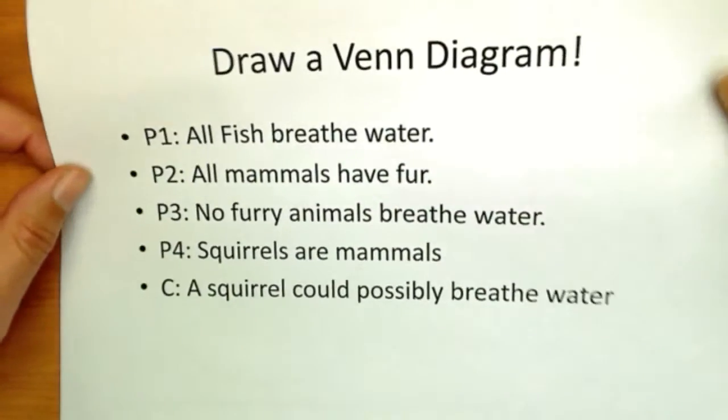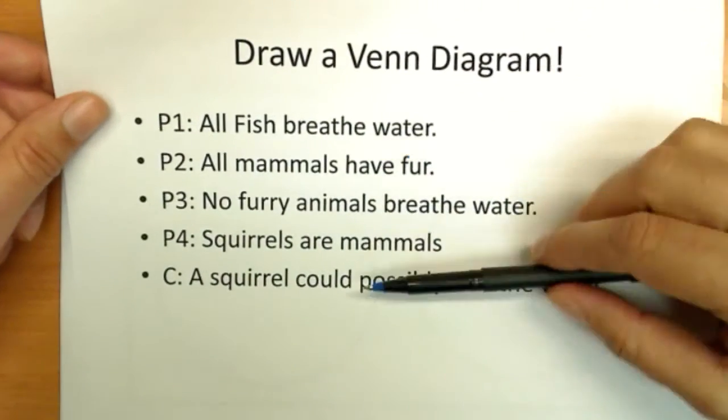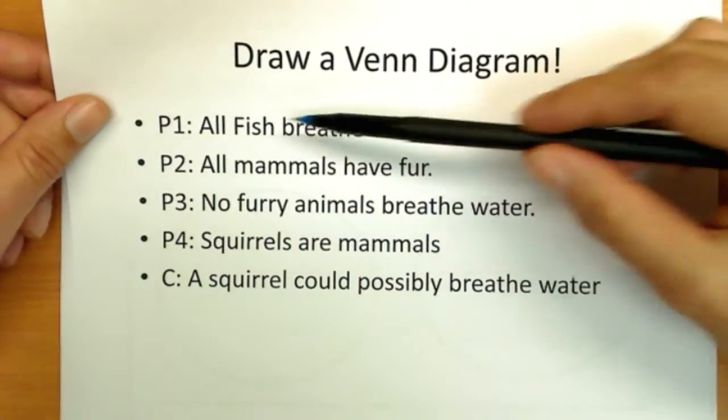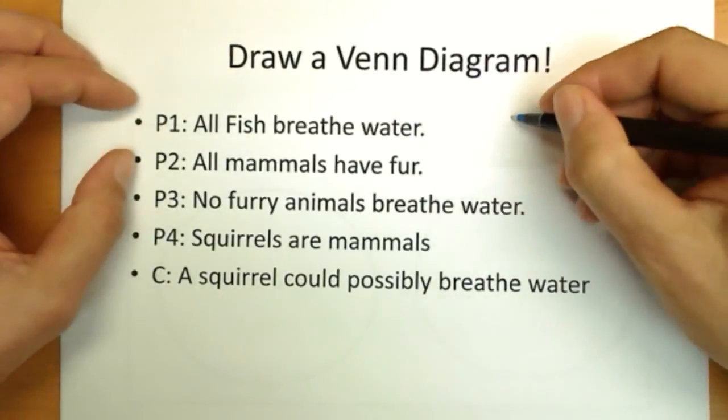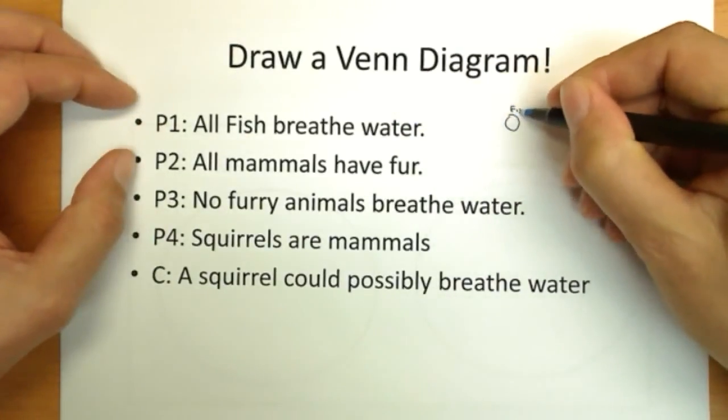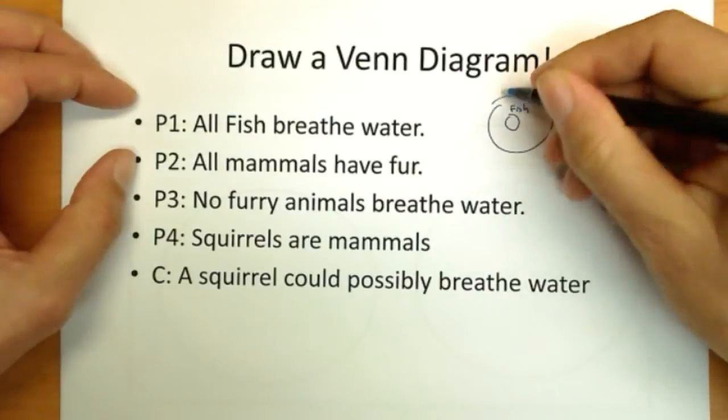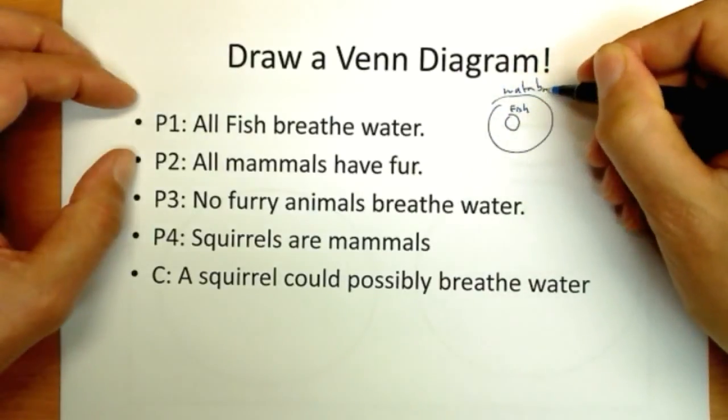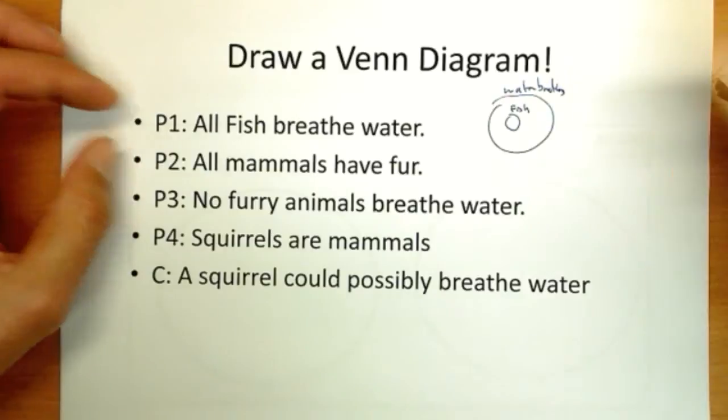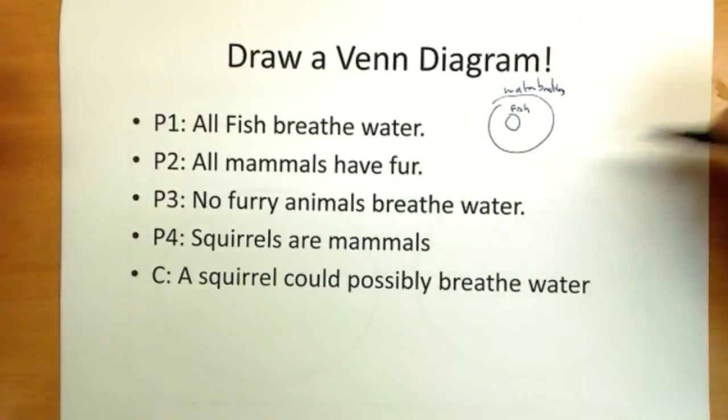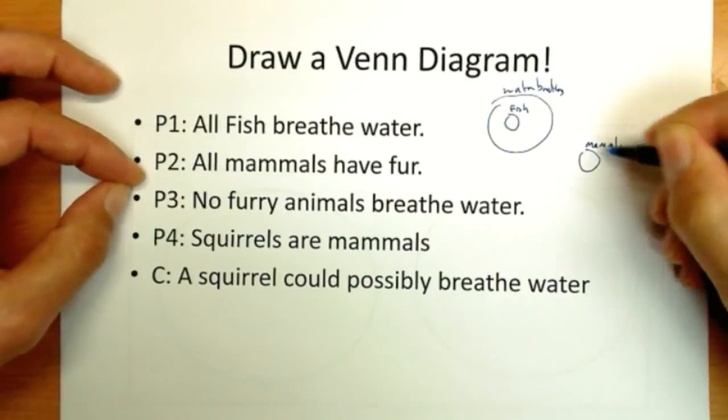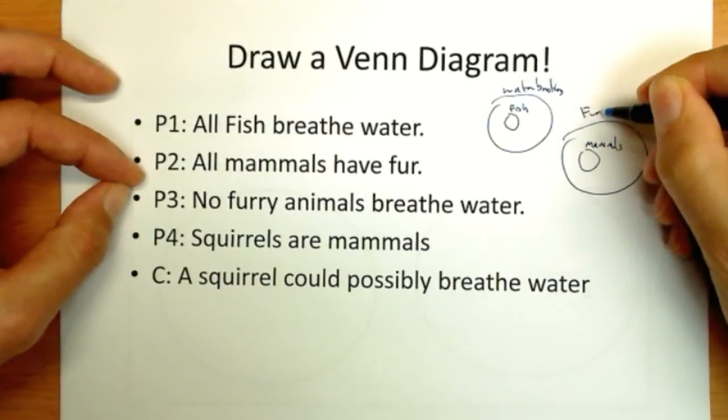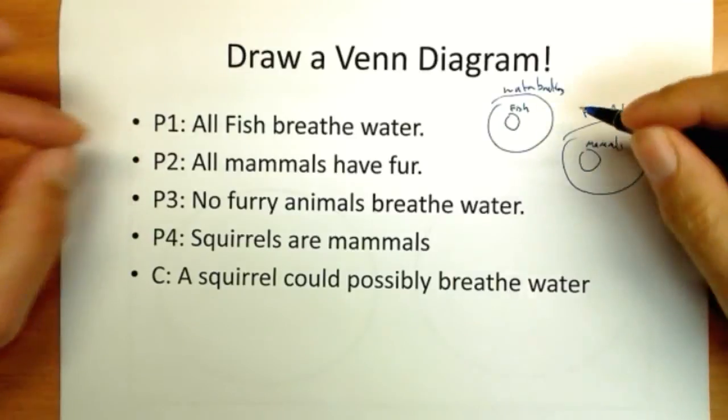Okay. Assuming you've already solved it, here we go and we'll have the answer. Now the first thing to note, we have four premises. We're going to have to organize a lot of different things. All fish breathe water. From previous work, we know when there's all of something, one is inside the other. So fish are inside the water breathers, so animals that breathe water. All mammals have fur is likewise going to put the group of mammals inside furry animals. So those two relationships are going to hold up.